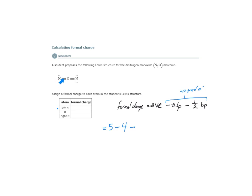Here we have a multiple bond — a double bond — and in this double bond are four electrons being shared between the nitrogen and oxygen. So half of four is two. Five minus four is one, minus two is negative one. So the formal charge on the left nitrogen is negative one.